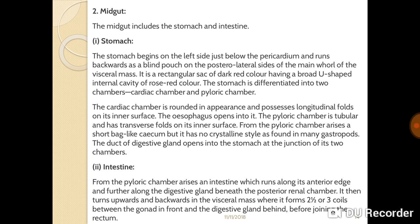From the pyloric chamber arises an intestine which runs along its anterior edge and further along the digestive gland, beneath the posterior renal chamber. It then turns upward and backward in the visceral mass where it forms one-and-a-half to three coils between the gonad in front and the digestive gland behind, before joining the rectum.